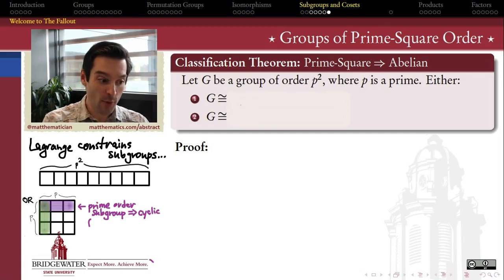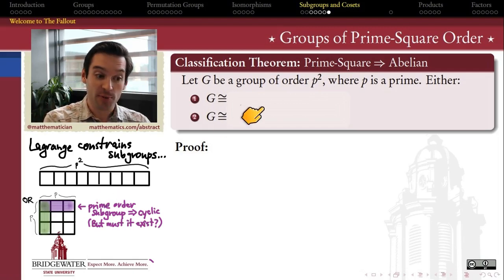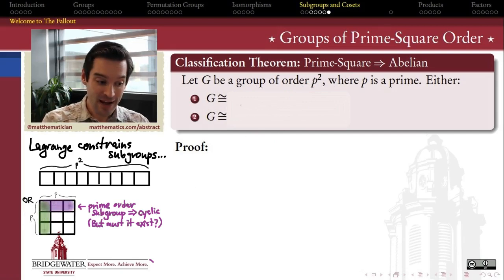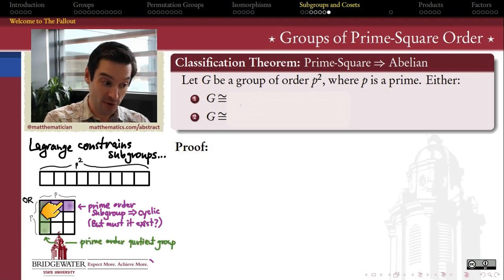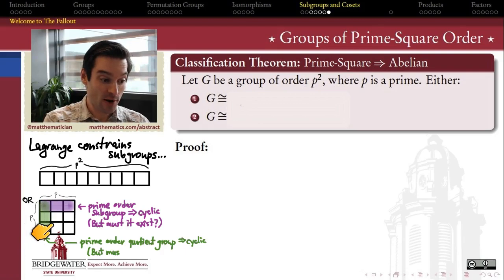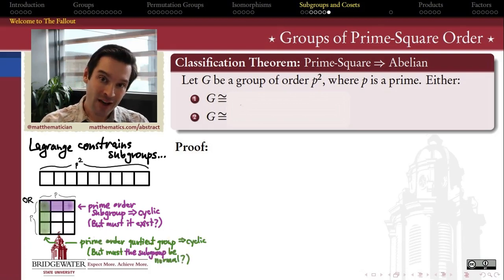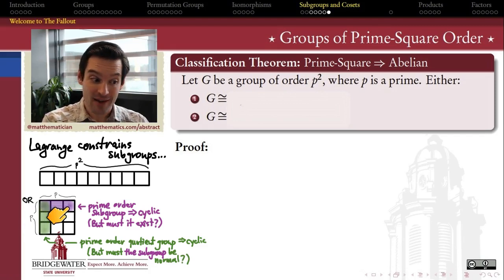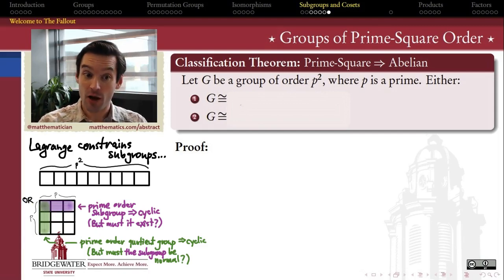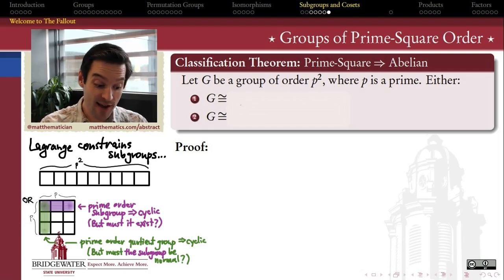We know that every group of prime order is going to be a cyclic group. The question is: if I have a group of prime-square order, am I guaranteed to have a subgroup whose order is p? If it does exist, that subgroup is going to be cyclic, and if that subgroup is normal, the factor group by that subgroup is also going to be cyclic because it has prime order as well. How do we know that this subgroup of order p exists, and how do we know it's going to be normal so we can find the factor group?